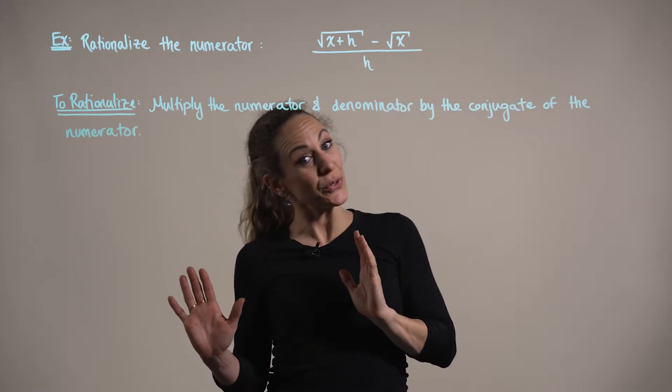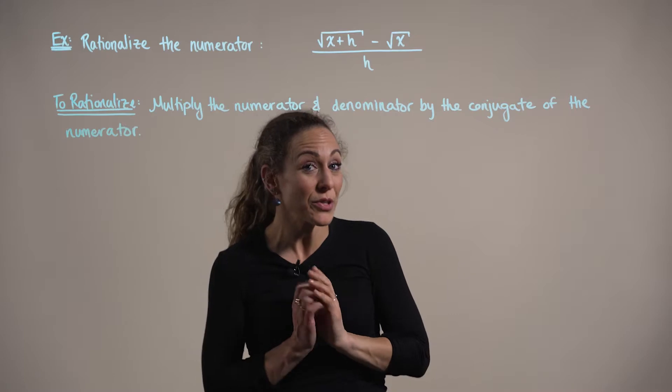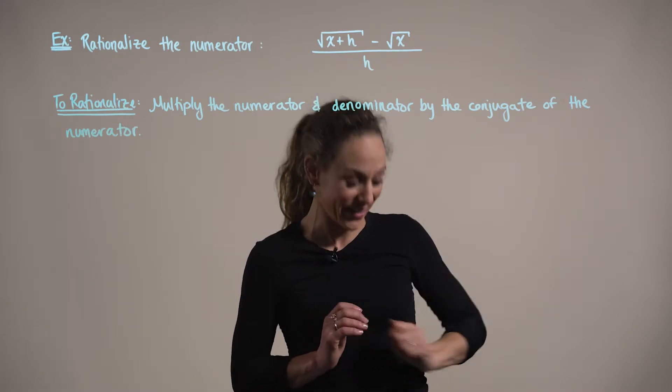In order to do that, if we multiply by the conjugate, we're going to produce a difference of squares.